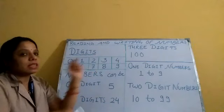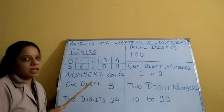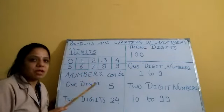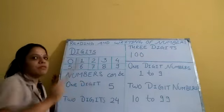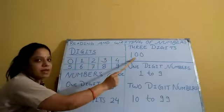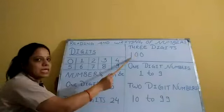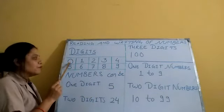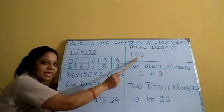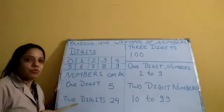Now let's come to 3-digit numbers. After 99, which number will come? That is 1-0-0, one hundred. In 100 there are 3 digits — 1, 0, 0. This number is formed with the help of 1, 0, and 0. So numbers can be 3-digit, 2-digit, or more.